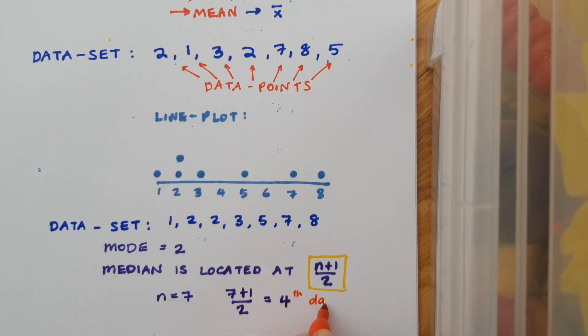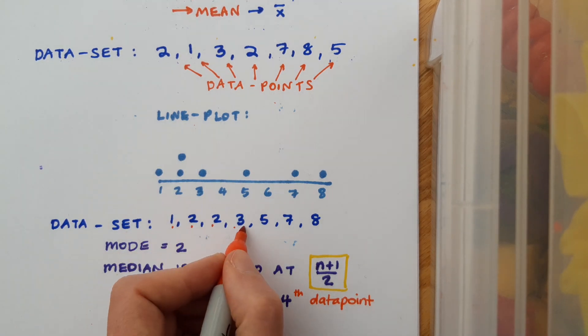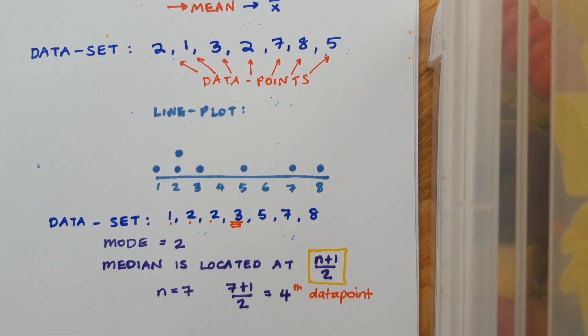But 4 isn't the answer. 4 is just the position of the median. So what we really mean by 4 here is that it's the fourth piece of data, or the fourth data point. And I can easily identify this from my line plot or my list: 1, 2, 3, 4. That's the fourth value, so that's the median. Median equals 3.